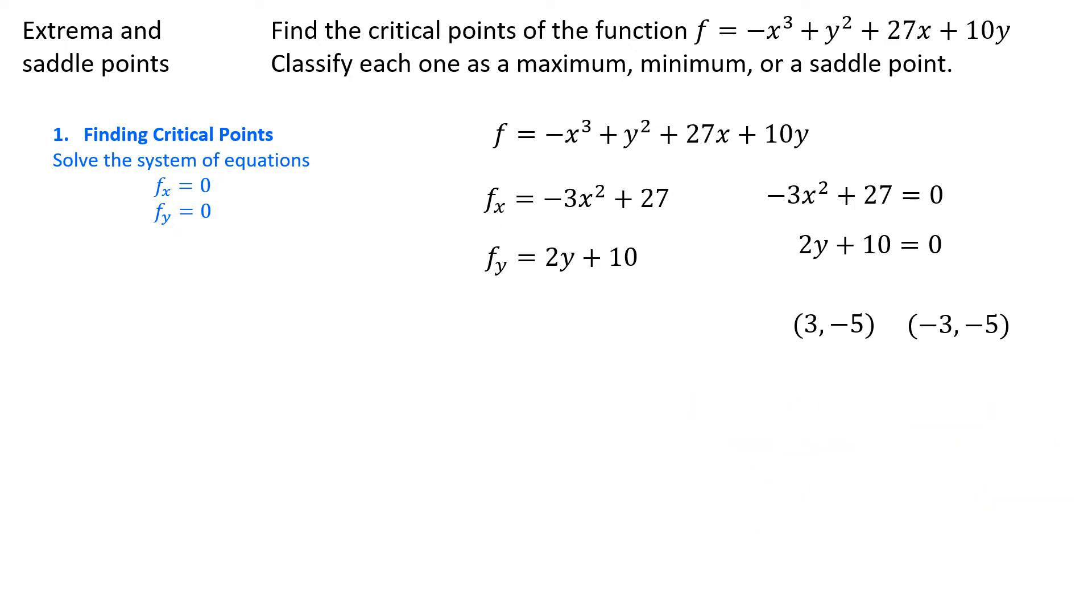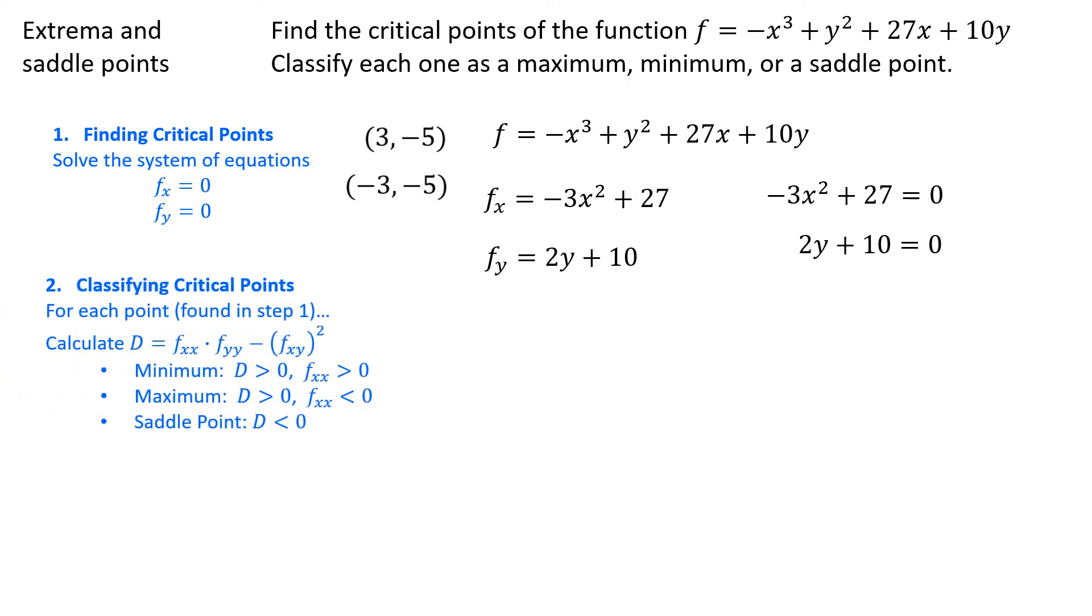Now that we've found the critical points, the next issue is to determine whether they're maximum, minimum, or saddle points. To do that, we need to get all the information about the second order partial derivatives, and we need to calculate something called the discriminant, or D.